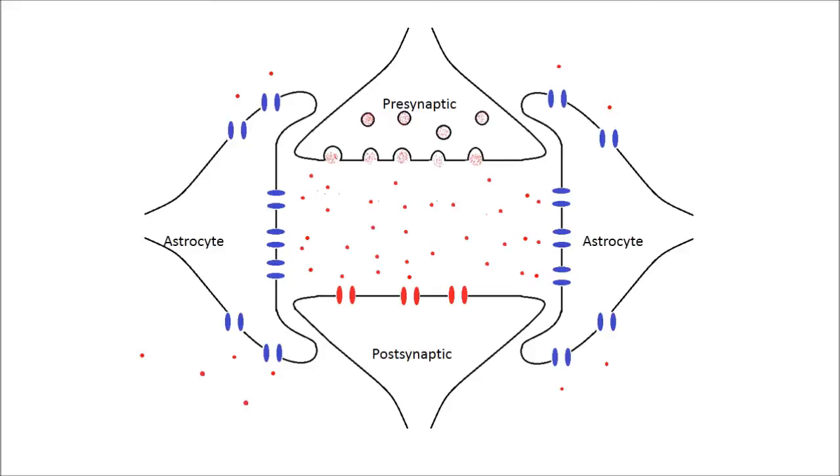In fact, glia, the class of cells that astrocytes belong to, comprise over 80% of the cells in your central nervous system. Compare that to neurons, which only make about 15% of the cells. As it turns out, without glia, meaningful synaptic transmission would not be possible.